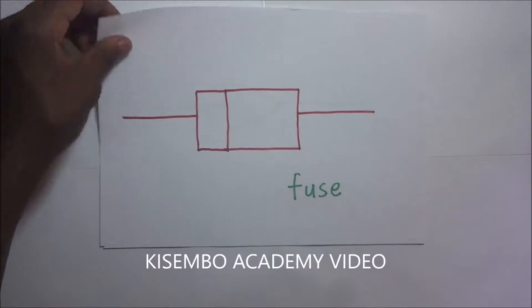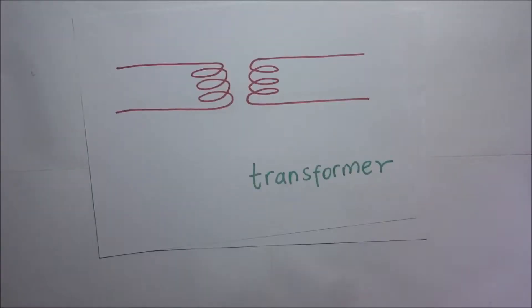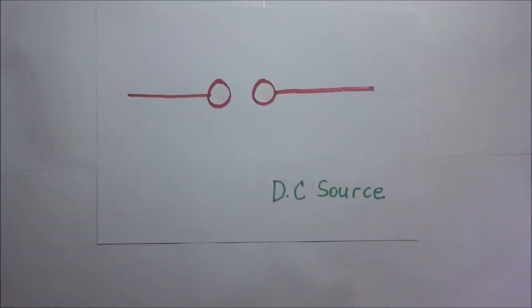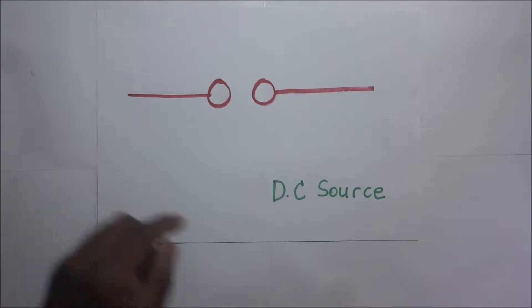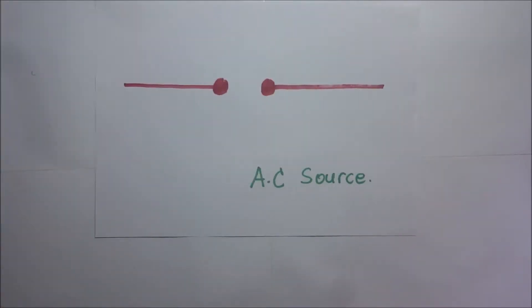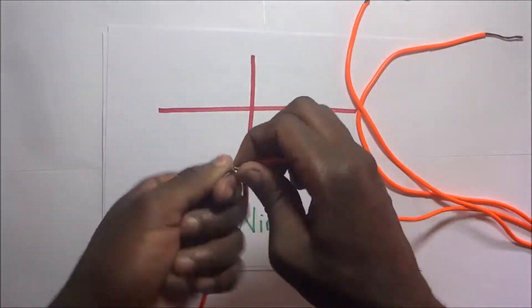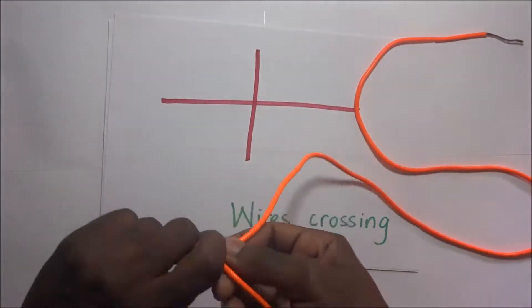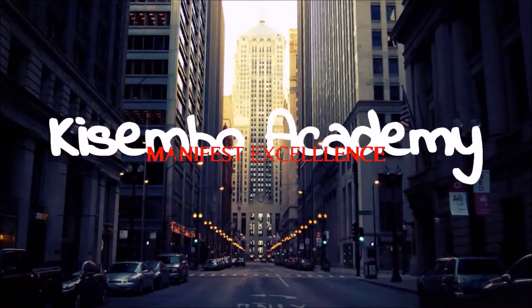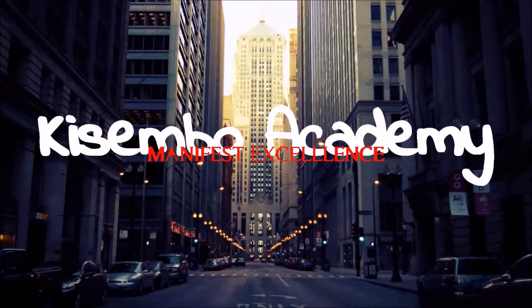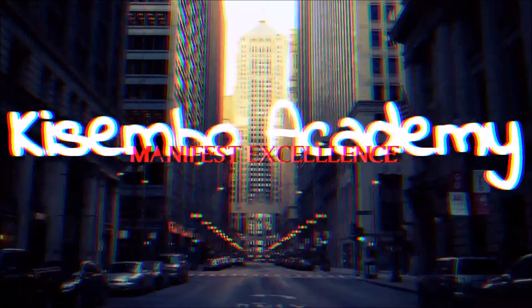That signifies a fuse, that's a diode, transformer, a DC source—DC means direct current—and then AC source—AC means alternating current. This brings us to the end of this video. Thanks for watching. Feel free to check out other excellent videos on the channel and don't forget to subscribe. This is Exam Prep Academy, helping you manifest excellence.